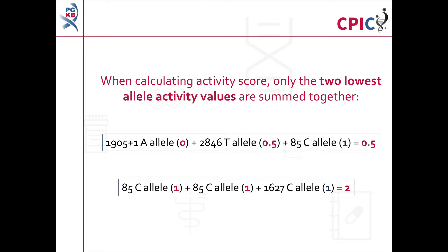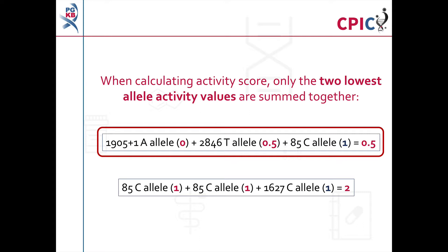Some patients may have more than two DPYD alleles. It is important to note that when calculating a patient's activity score, only the two lowest allele activity values are added together. For example, if a patient carries a 1905+1 A allele with an activity value of 0, the 2846 T allele with an activity value of 0.5, and the 85 C allele with an activity value of 1, you would only sum the alleles with activity values of 0 and 0.5. This patient would have an activity score of 0.5.